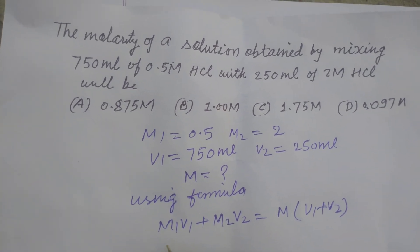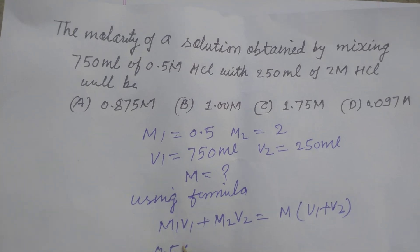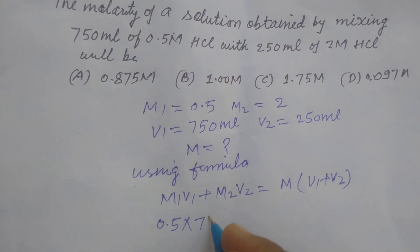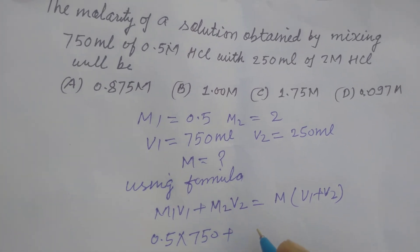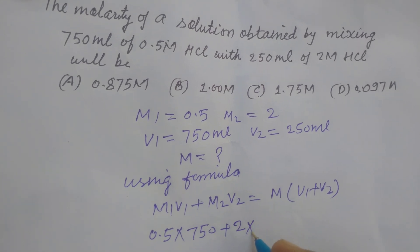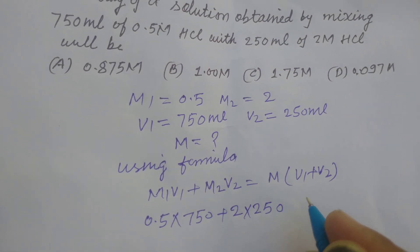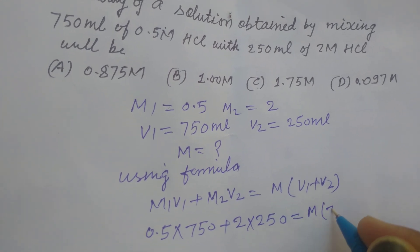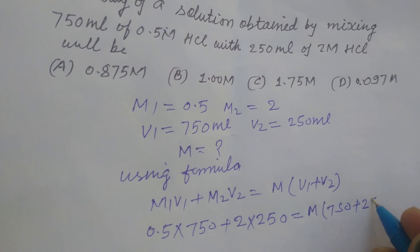we put the values here. M1 is 0.5, V1 is 750, plus M2 is 2, and V2 is 250, equal to M into 750 plus 250.